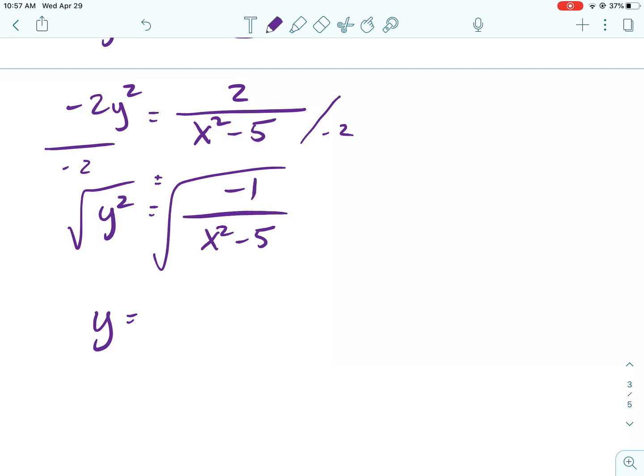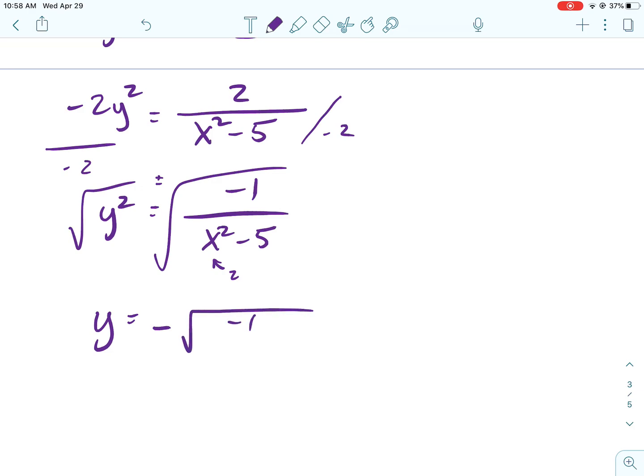And then, take the square root. Now, you guys know that when we solve equations by taking the square root, we do positive or negative. But, there's only going to be one answer. It's either going to be the positive square root or the negative square root. So, this is where we look at that initial condition.